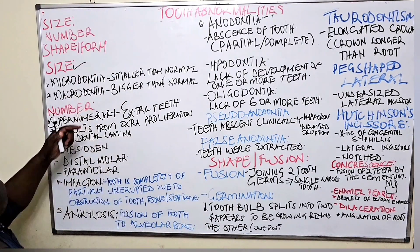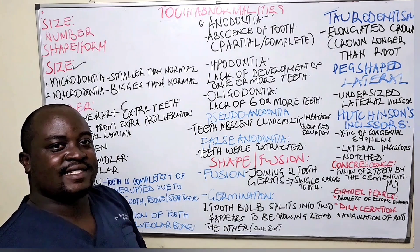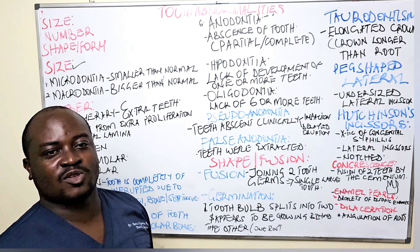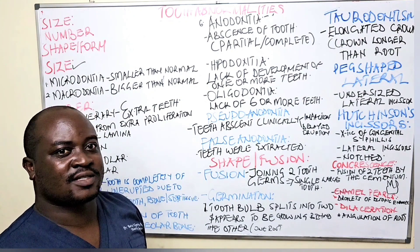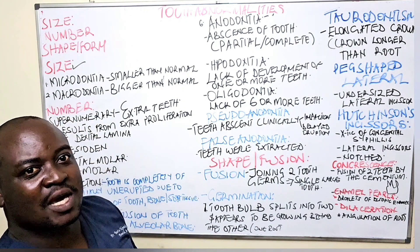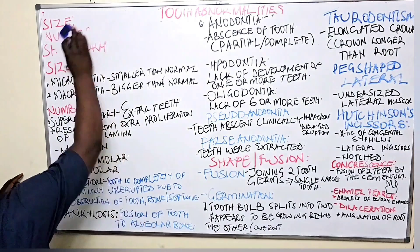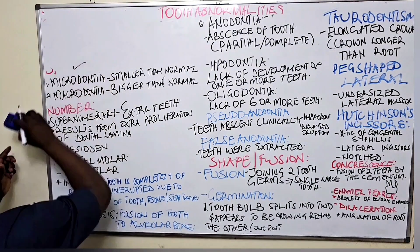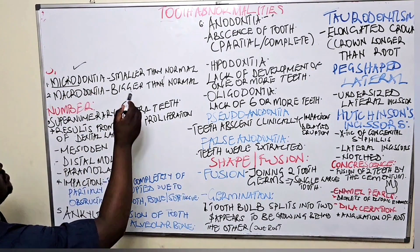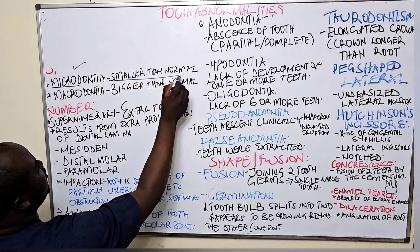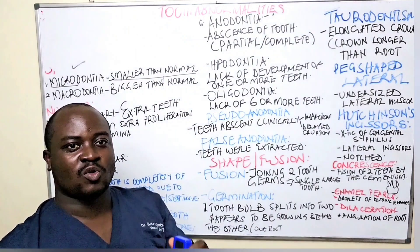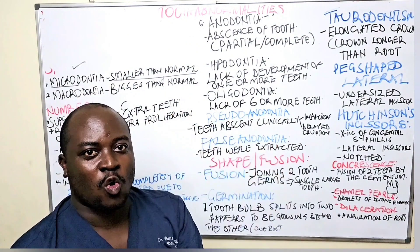In terms of size, sometimes you find a tooth is smaller than the actual size. A smaller tooth — that condition we call microdontia, from the word 'micro' meaning small. If the tooth is bigger than normal, we call it macrodontia.